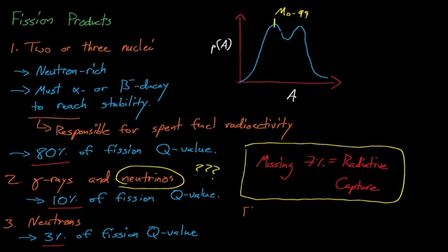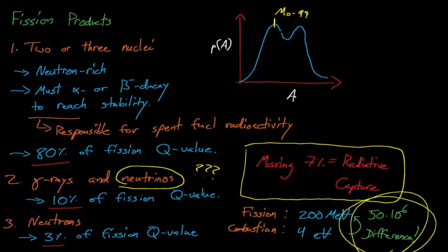Overall, each fission reaction releases about 200 MeV of energy, which is about 50 million times as much energy as is released by each coal combustion reaction. This is because nuclear forces are much stronger than atomistic forces, and it speaks to the potential of nuclear power. Because fission generates 50 million times as much energy per reaction, a nuclear power plant needs about 50 million times less fuel than a coal plant and generates about 50 million times less waste. This is what makes nuclear power so energy dense and what allows for it to be used in long-term scenarios where refueling is impractical or impossible, such as in nuclear submarines, in remote power stations, and for powering deep space missions.